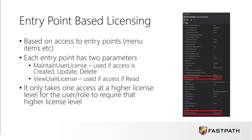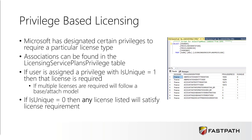For example, if a user has 100 accesses at an activity level and they only have one access at an enterprise or operations level, that's going to make that user required to have an operations level license. That's the entry point-based side. For the privilege-based side, this works in conjunction with the entry point-based licensing. Microsoft has designated certain privileges to require a particular license type. These associations between the privilege and the license aren't available in any report natively within D365, but you can actually get there if you have access to the back end in the table called the licensing service plans privilege table. If you dig into that, you can actually get the privilege to license associations there.